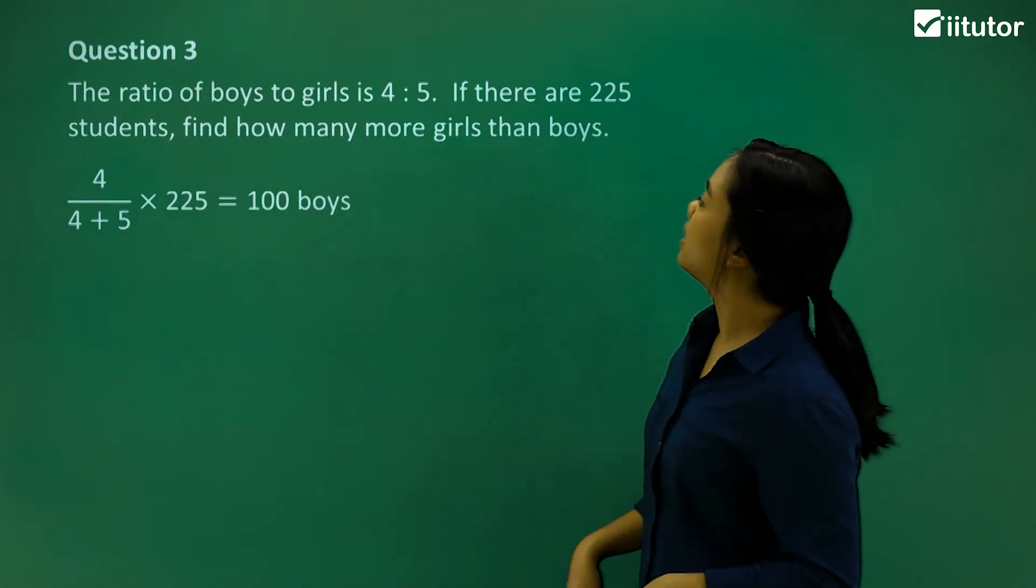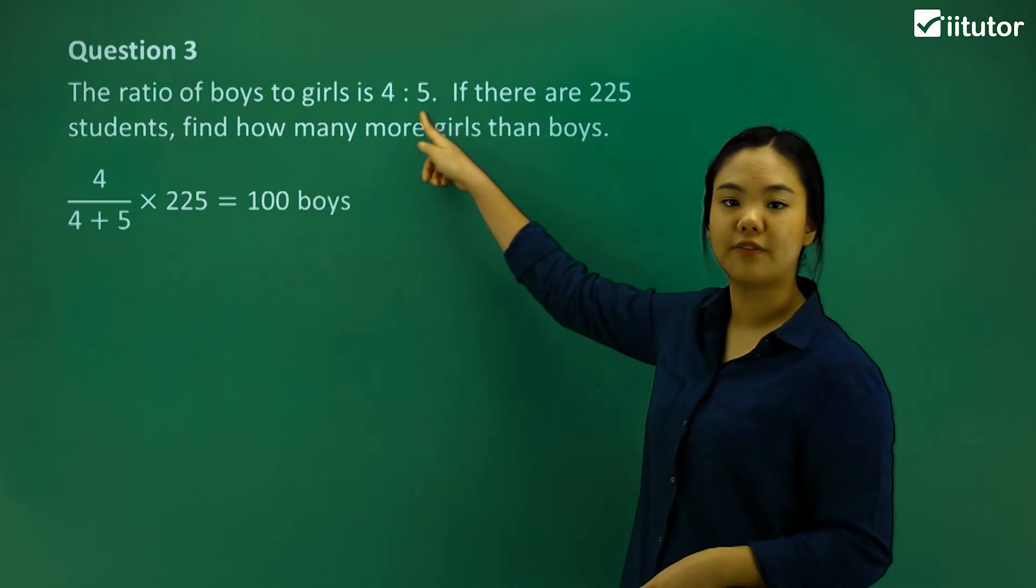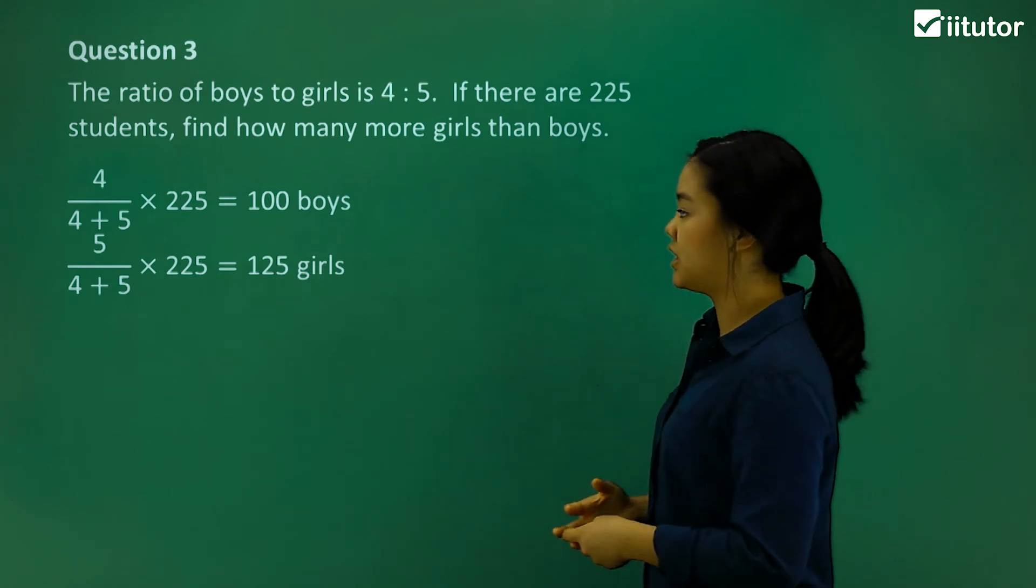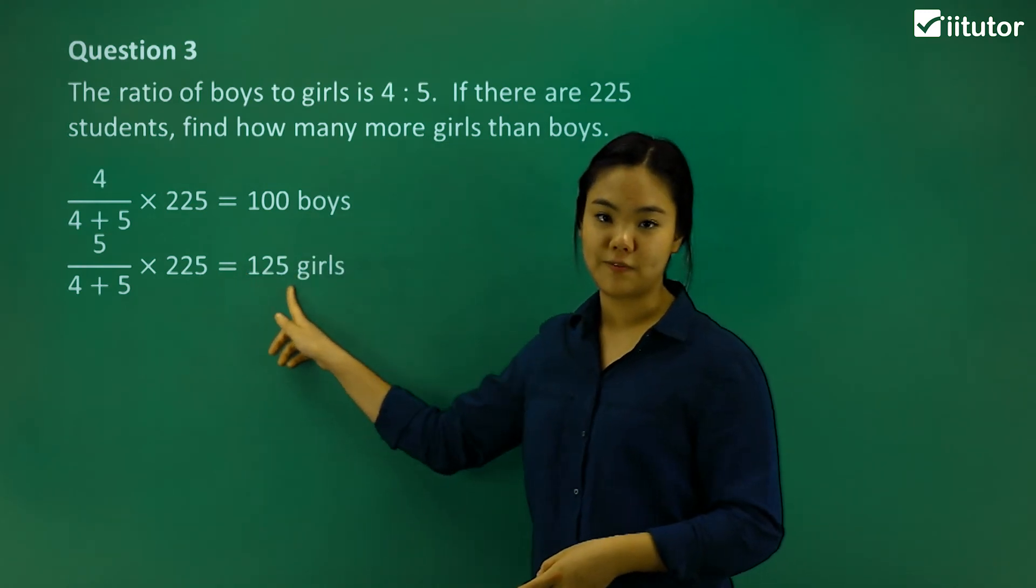Okay, and to find out how many girls, we just do it 5 over 4 plus 5 times 225, which is the total number of students, and it's 125 girls.